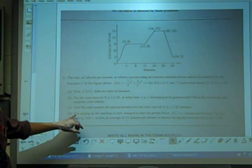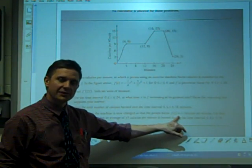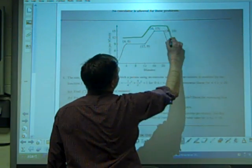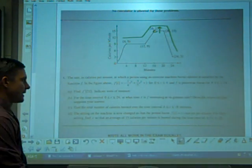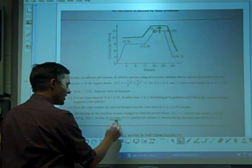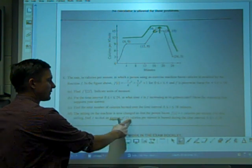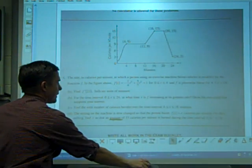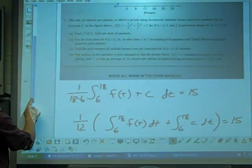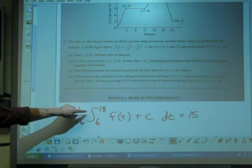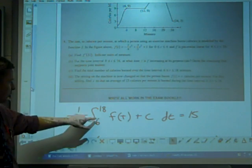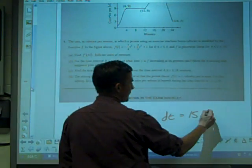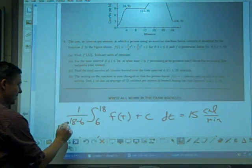Last part, D. The setting of the machine has now changed so that you burn F(T) + C calories more. So you're going to actually shift this curve up C calories. For this setting, find C so the average of the function, of 15 calories per minute, is burned during the interval 6 to 18. Again, 6 to 18, we have to know how many calories were burned total, but they want average. So this is an average function. So I'm looking for the average function from 6 to 18. So 1/(18-6) times the integral from 6 to 18 of the function, F(T) + C now, dT, has to be 15 calories per minute.